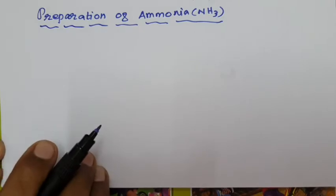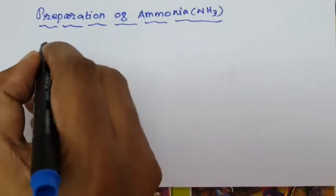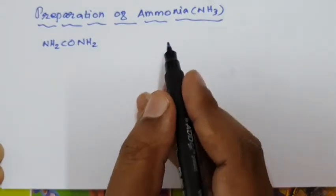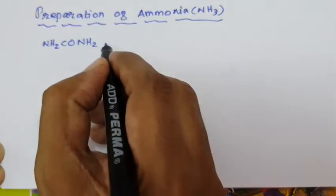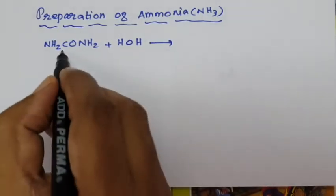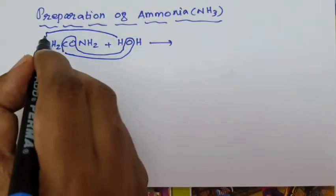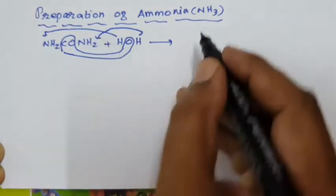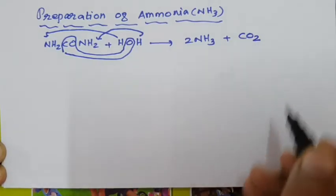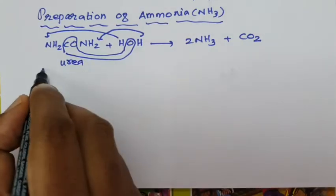Preparation of ammonia — first method: urea. The molecular formula for urea is NH2-CO-NH2; it is an example of a diamide. Urea undergoes hydrolysis with a water molecule. The CO is removed as CO2. One H is added to one nitrogen and another H is added to the other nitrogen. So two molecules of ammonia are formed with the liberation of carbon dioxide CO2. This is the first method — hydrolysis of urea.